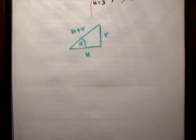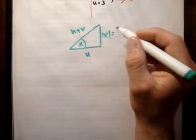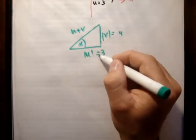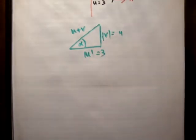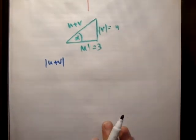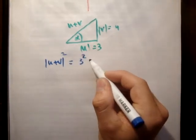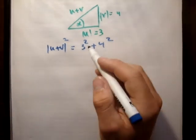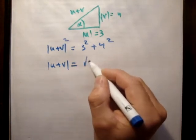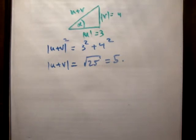All right, so we're asked to find the magnitude of this vector. The magnitude of u is equal to 3, and if you look this is a right angles triangle, so to get the magnitude of u plus v, it's just Pythagoras. So the magnitude of u plus v squared is equal to 3 squared plus 4 squared, and that's equal, therefore u plus v is equal to the square root of 25, is equal to 5 units.